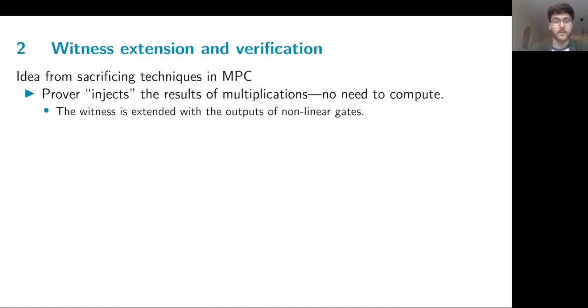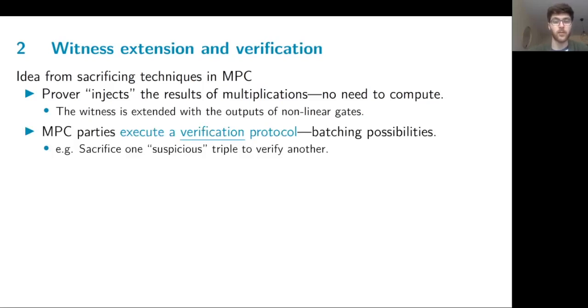The next paradigm that we can explore in MPC-in-the-head is to move away from this cut-and-choose for verified randomness, and instead let the MPC protocol itself do the verification. This comes from sacrificing techniques in MPC, where a lot of correlated randomness is created, and some of it is sacrificed to verify the rest. Here we would have the prover inject the result of multiplication as part of the witness for the relation. This means that there is no need to compute through the circuit anymore. Instead, the MPC parties execute a verification protocol. For example, they can sacrifice one suspicious triple to verify another. And this leads to efficiency optimization, such as batching possibilities.